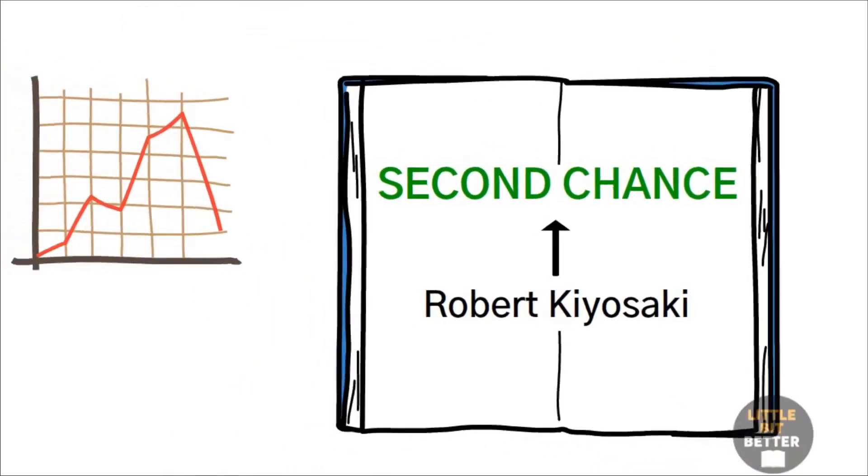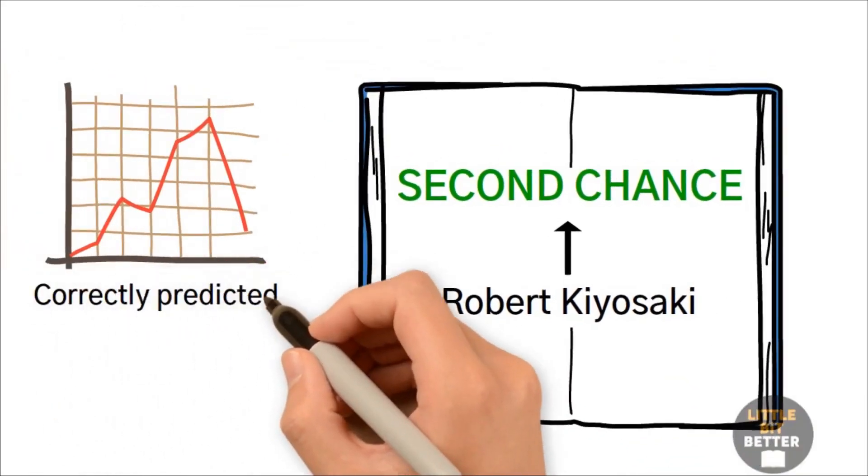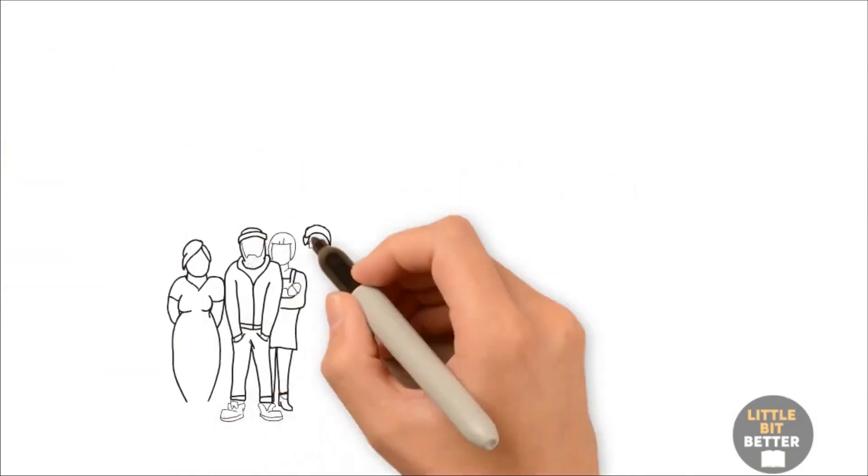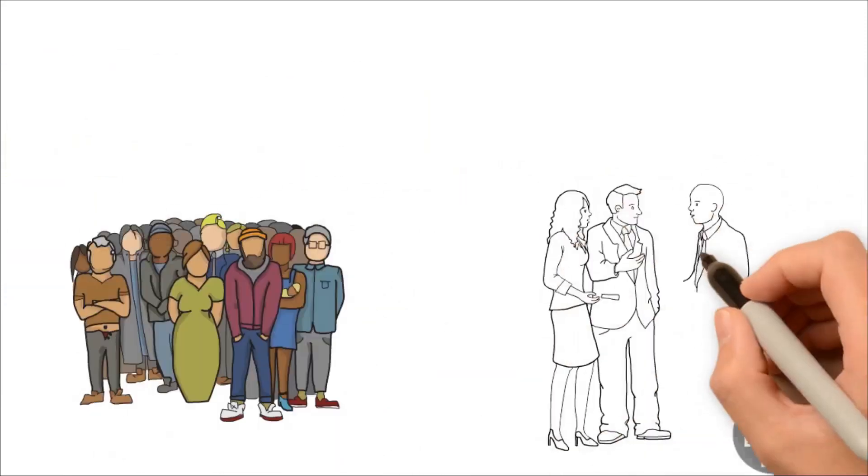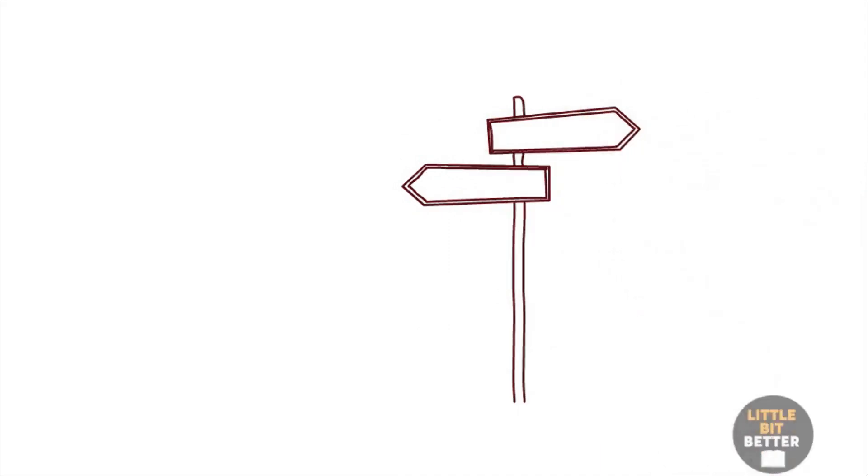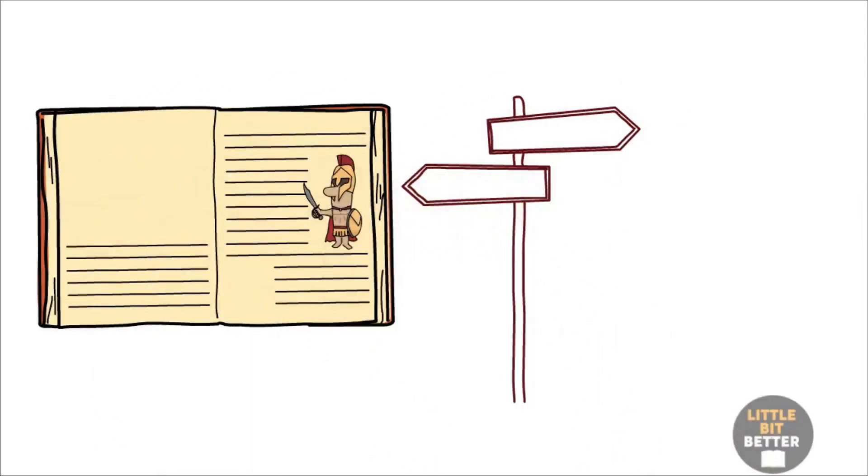Kiyosaki is one of the few people who correctly predicted the 2008 financial crisis. During crisis, wealth is not destroyed. It is simply transferred from one group to another. If you study history, then you can predict the future and position yourself correctly.